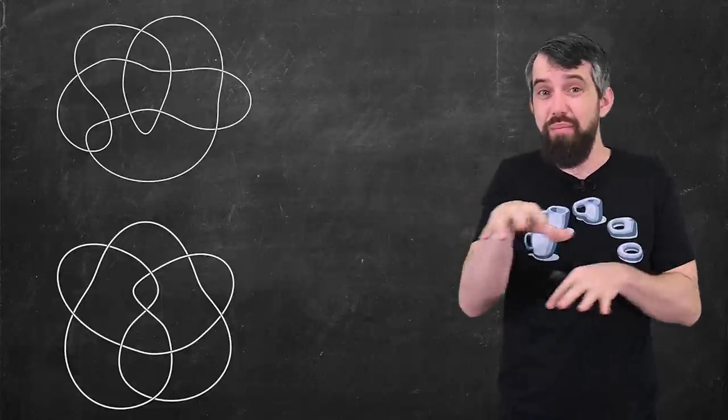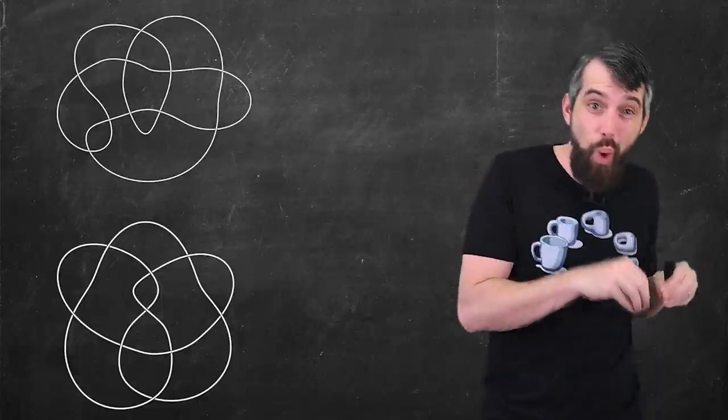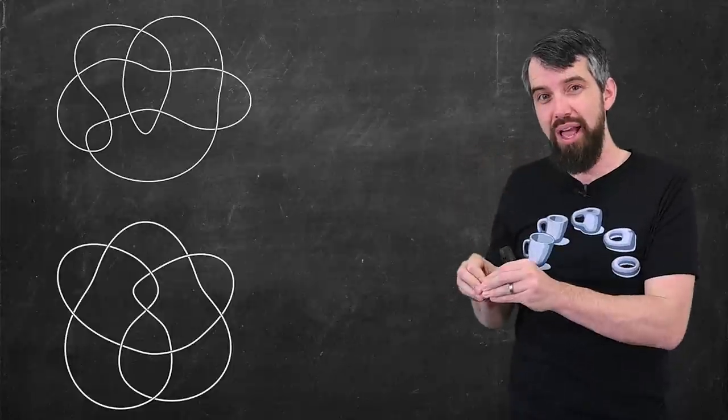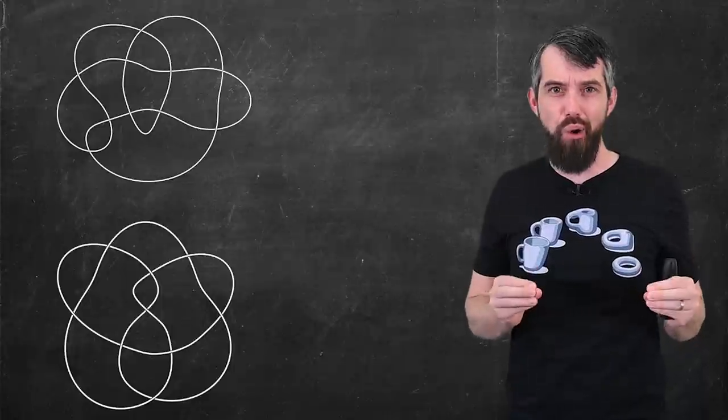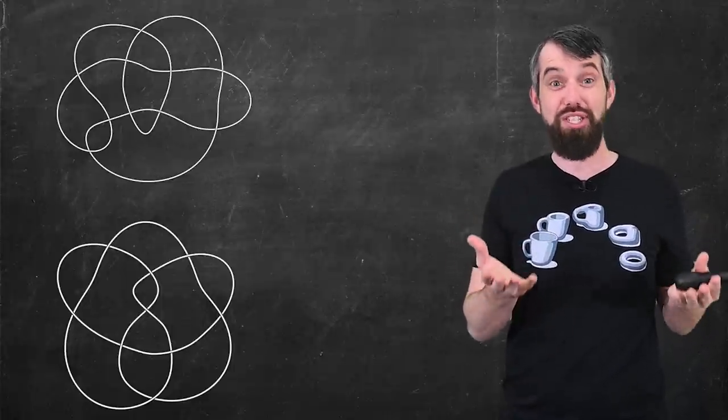Now, you could pause and try to think about Reidemeister moves you could do and see if you could take one and manipulate it to the other. But suppose you never found a sequence of Reidemeister moves. How would you know when to stop looking for such a sequence?